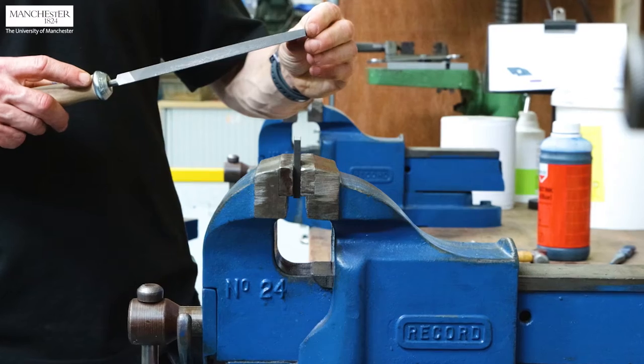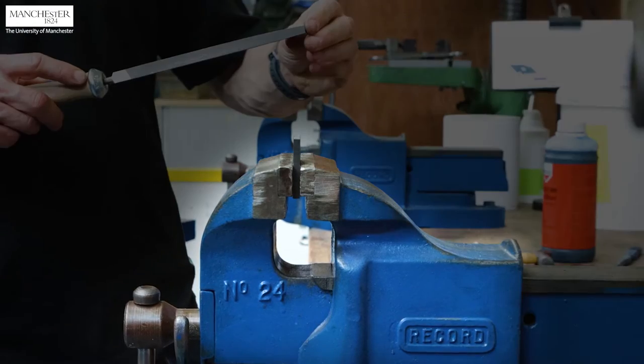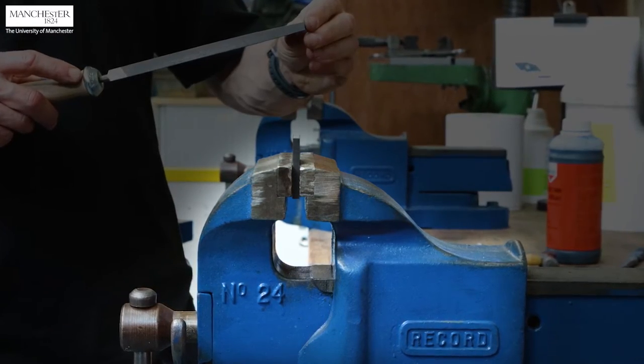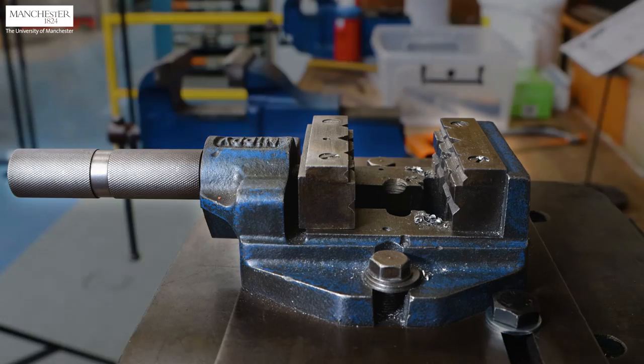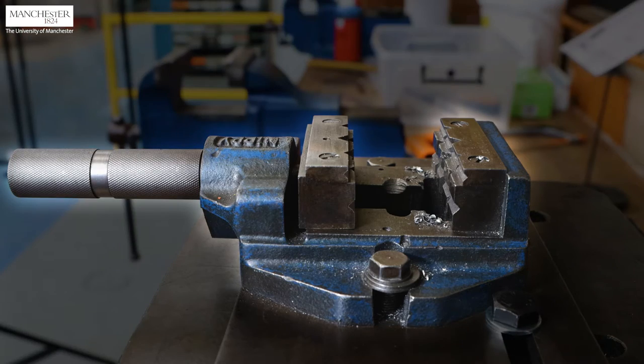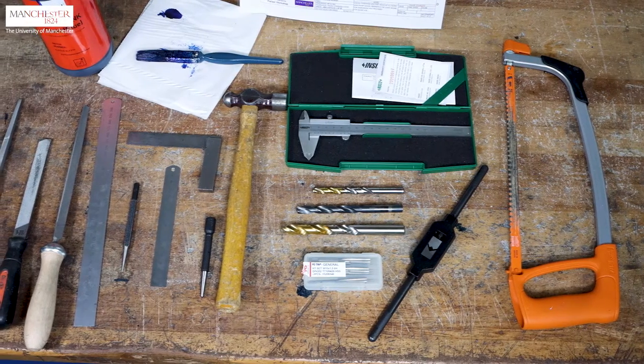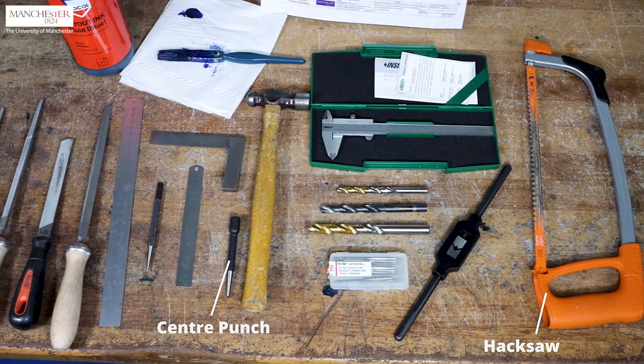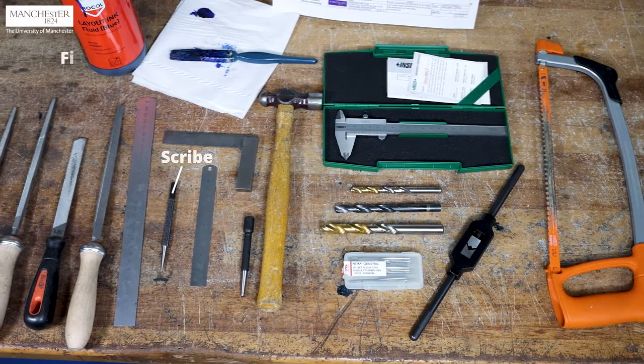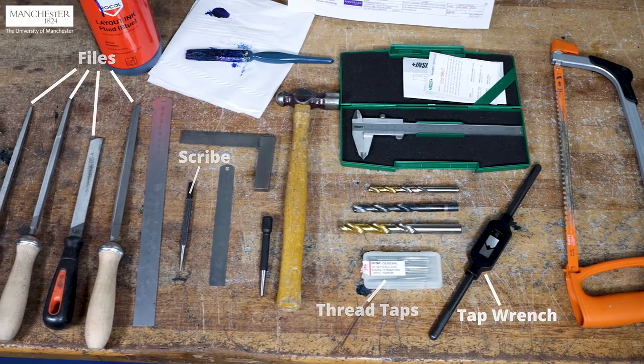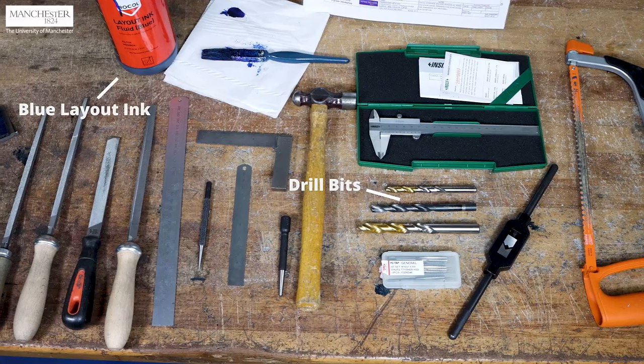We will use two vice clamps. The fixed one on the bench is for filing and tapping, and the other portable vice is used for producing holes at the drill press. Other equipment are hacksaw and centre punch and hammer, scribe, files, thread taps and tap wrench, drill bits, and blue layout ink.